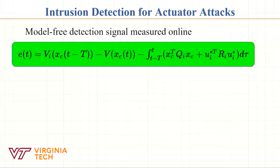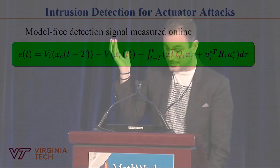Because we want to be model-free, we found a model-free formulation for the Hamilton-Jacobi Bellman equation, which we call integral reinforcement learning. I want to check this error, and by solving it equal to zero I actually solve the Hamilton-Jacobi Bellman equation - but it is model-free. There is no model required there; I just measure the state, find my reward, and compute the result.